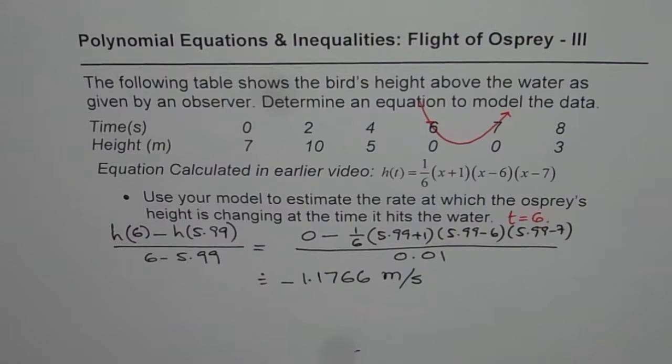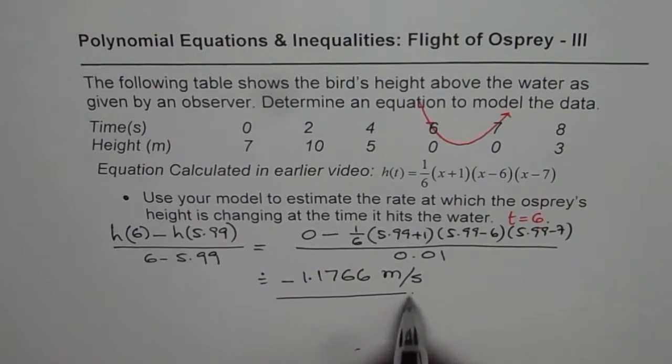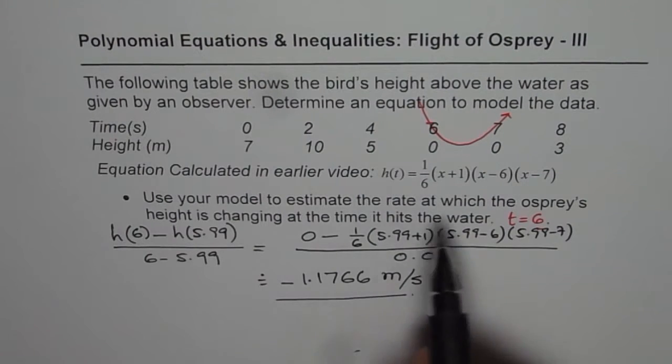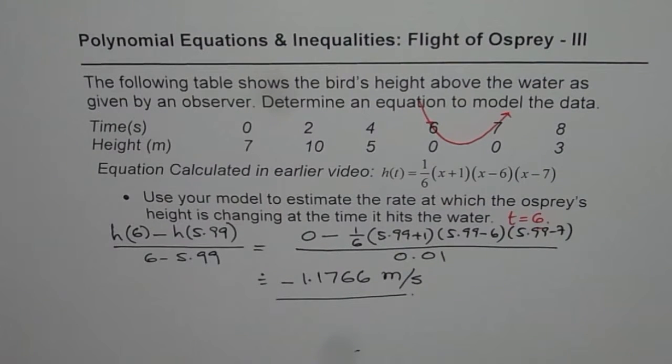So that is how we can find the rate of change of height at the time when the osprey hits the water, correct? That is our solution. In the next video, we will see how to find this average rate of change by drawing a tangent on the curve. We will summarize all the things you have learned. I hope this exercise helps you understand and appreciate the concept. I am Anil Kumar. You can subscribe to my videos and learn a lot. Thank you and all the best.